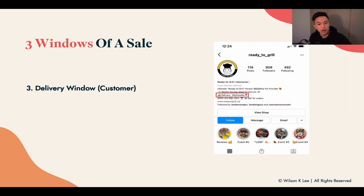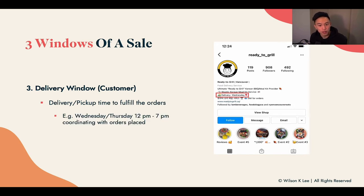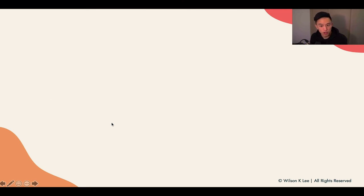For example, you can do all your purchasing on Sunday, packaging on Monday, and delivery on Wednesday. Once those two windows are dictated and communicated to your customers, then dictate the delivery window — it's either delivery or pickup to fulfill the order. For example, Wednesday and Thursday are pickup and delivery from 12pm to 7pm, so you can coordinate with all the customers who have placed an order.